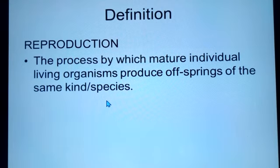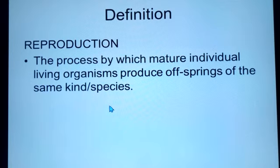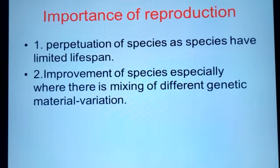There is a need to replace the organisms once their parents die. Therefore, we concentrate on looking at one of the processes that occurs in a living cell, and this process is the one that we refer to as reproduction. Now, why do we need this process? There are two main reasons as to why reproduction is a very critical process in a living thing.